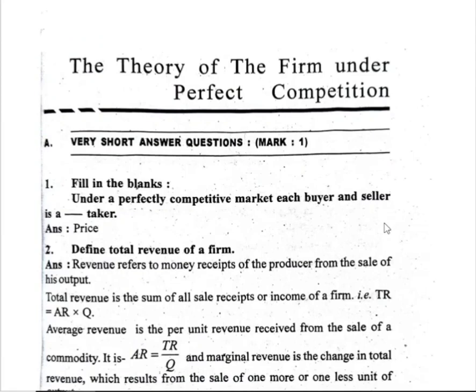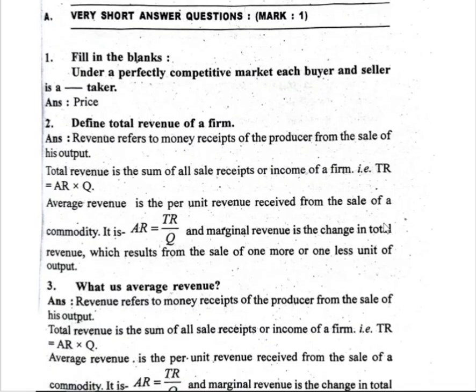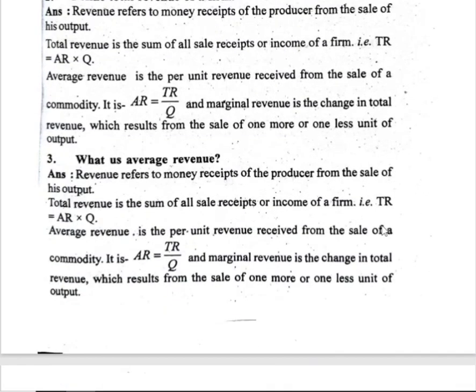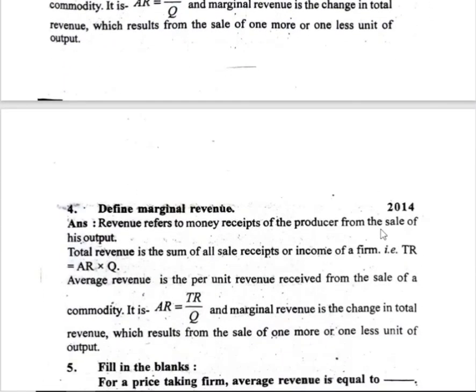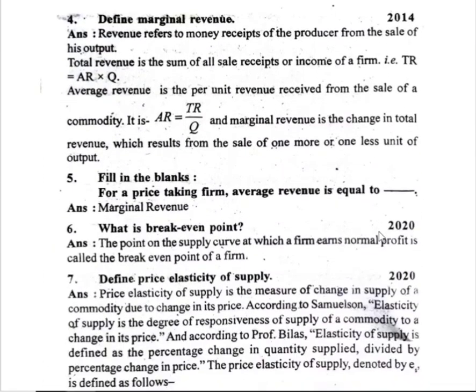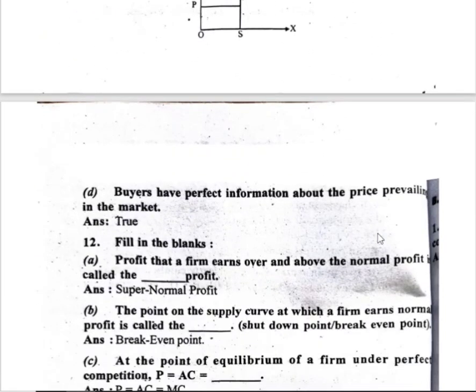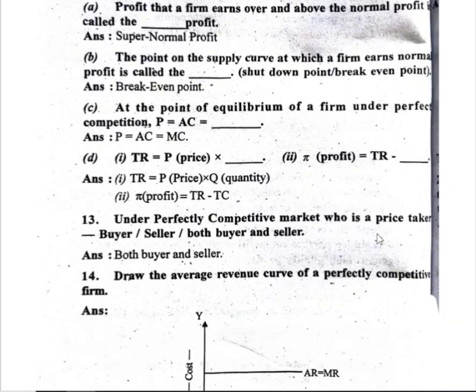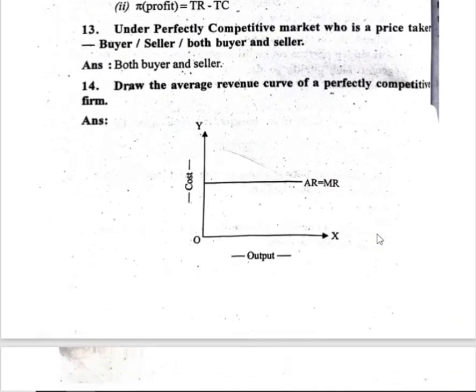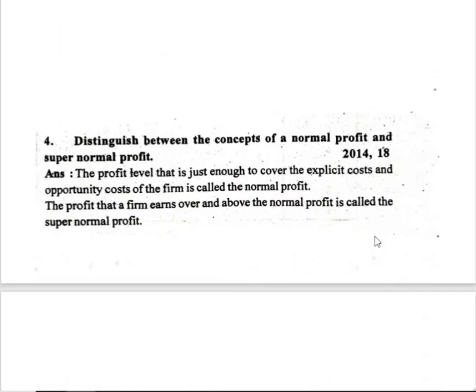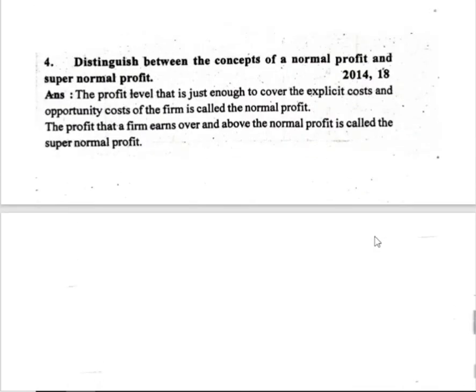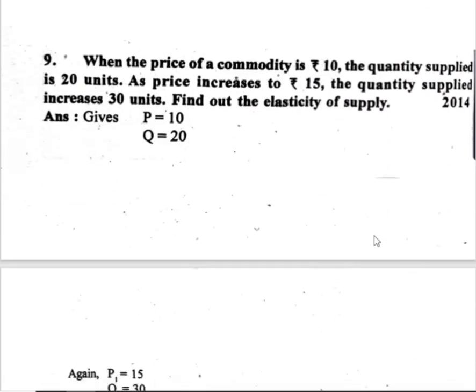Chapter 4: the theory of the firm under perfect competition. Questions 1, 2, 3, 4 (marginal revenue), 5, 6, 7, 8 are important. MCQ-type questions 13 and 14 are noted. Question 4: distinguish between the concept of normal profit and supernormal profit. Question 9 is also important.